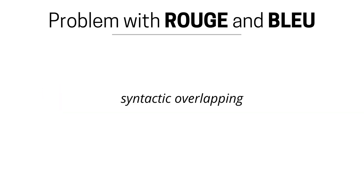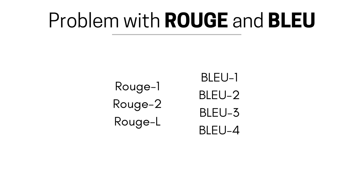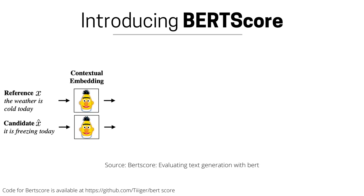Existing systems such as ROUGE and BLEU totally depend on the syntactic overlap between what you have generated and what should have been generated, trying to achieve coverage by incorporating unigrams, bigrams, trigrams, and the longest common subsequence. This motivates introducing BERTScore.